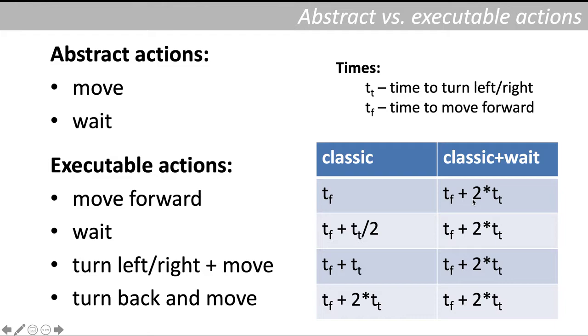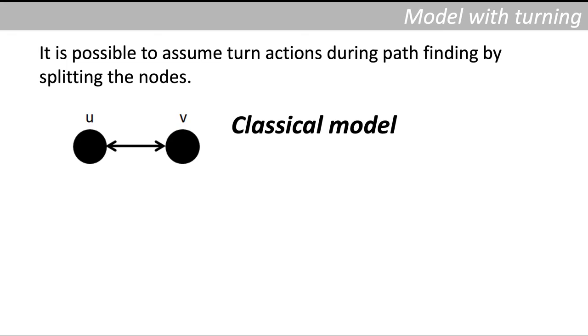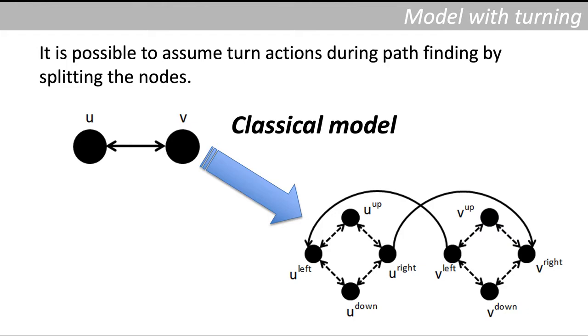There is another approach we can use and that's including the turning actions directly in the model. So in the classical approach we just use nodes as states and we move between the nodes. A simple suggestion is to split the nodes to four nodes describing also orientation of the agent: up, down, left, and right. So that's why we call this model a split model.